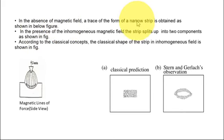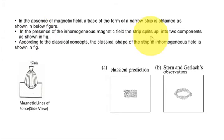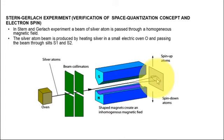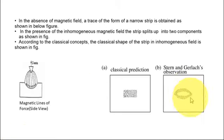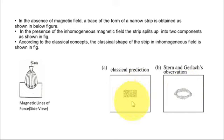In the absence of a magnetic field, a narrow strip — a single line — is obtained on the photographic plate. In the presence of the inhomogeneous magnetic field, the strip is split into two components. You can see from the figure that the beam is split into two parts and an image is formed on the photographic plate. However, according to classical concepts, the beam would not split into two discrete parts; instead it would be obtained as a continuous strip.